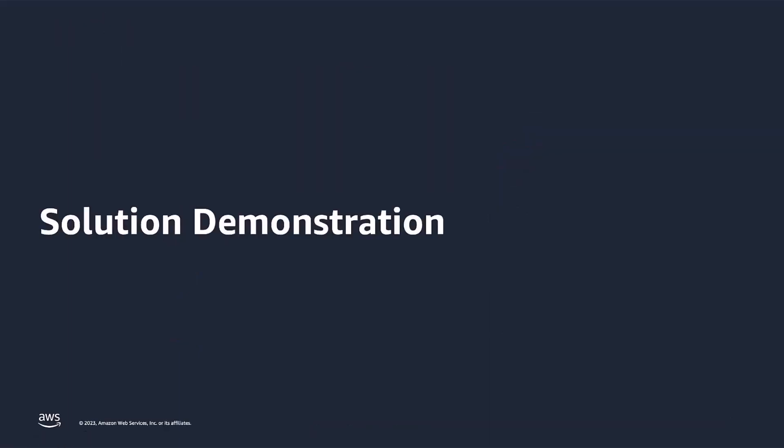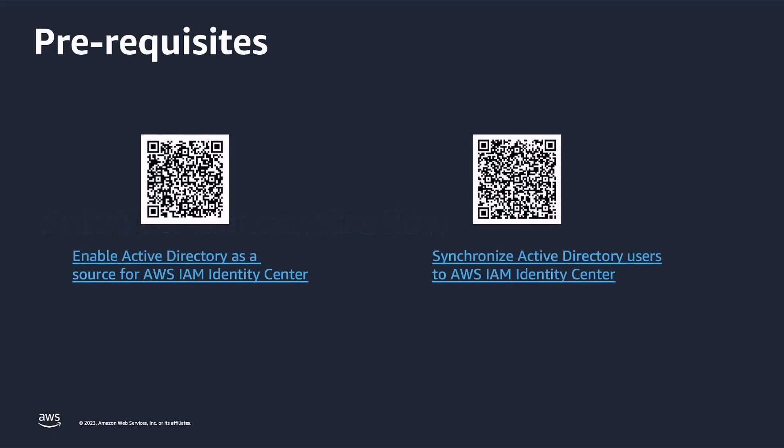For this demo, I've already completed a couple of prerequisites. Specifically, I have completed integration between AWS IAM Identity Center and AWS Managed Microsoft AD. By doing this, I'm enabling Active Directory as a source for AWS IAM Identity Center. The users and groups in this demo are flowing in from my Active Directory into AWS IAM Identity Center. Now, after I enable Active Directory as a source, the next step would be to synchronize Active Directory users and groups to AWS IAM Identity Center. Both of these have been documented on the AWS documentation website. Scan the QR code or follow these links for more details.